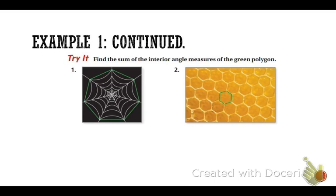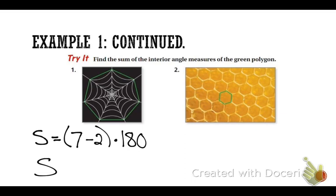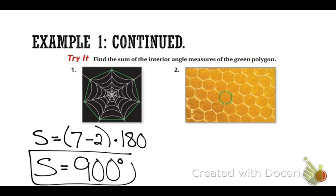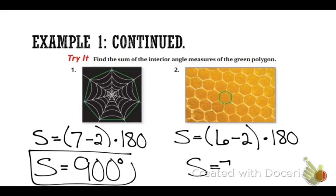Number 1: how many sides are on the spiderweb? Seven. So once you know heptagon — if you have it memorized, just write the answer. If you need the formula: n minus 2, which is 7 minus 2, times 180. 7 minus 2 is 5; 5 times 180 is 900. Raise your hand if you got 900. Now do number 2 the same way — count the sides, either recall from memory or use the formula. Number 2: 6 minus 2 times 180. Did you get 720? 720 degrees.